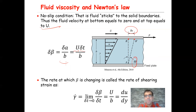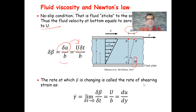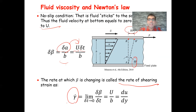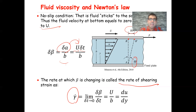So delta beta from trigonometry is equal to delta A divided by the side, B. From physics, we know that displacement delta A is equal to velocity times the time required for that displacement, delta T. So delta beta equals delta A divided by B, which equals U·delta T divided by B. The rate at which beta is changing is called the rate of shearing strain, represented by gamma-dot, which equals the derivative of beta — that is, U divided by B, or equivalently dU/dy.